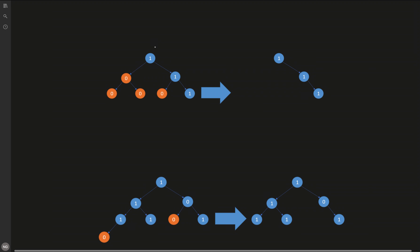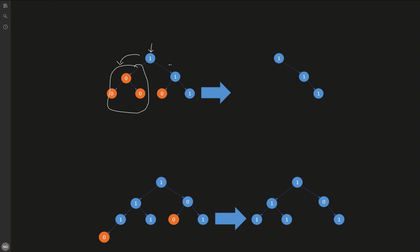In another example, before removing any node we need to go deeper first to know if the left subtree and right subtree of a node contain all 0s or not. If yes, we can remove both subtrees. But if the current node itself has value 1, we go deeper. So before taking any action on the current node, we need information about its left and right subtrees.